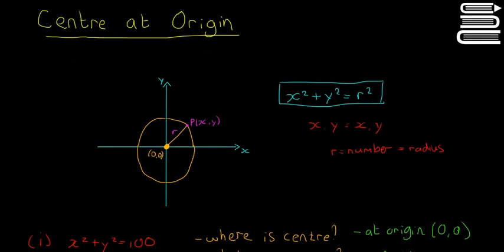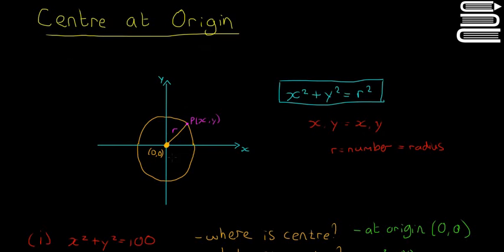It does get a little bit harder when we look at circles that don't have centers at the origin. But that's a brief intro to a circle of the form x squared plus y squared is equal to r squared. So hope you enjoyed it. Don't forget to like and subscribe.